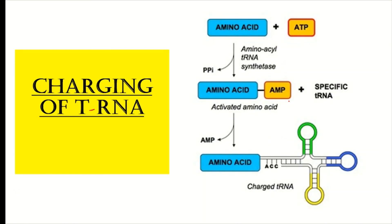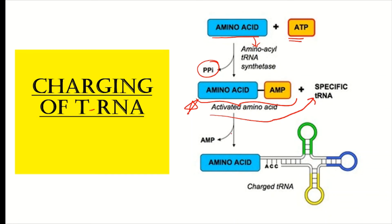Let's quickly recap the process of charging of transfer RNA. First, the amino acid binds to aminoacyl-tRNA synthetase in the presence of ATP, resulting in the formation of an amino acid–AMP complex; two inorganic phosphates (pyrophosphate) are removed and the amino acid is now activated. This activated amino acid then reacts with the specific transfer RNA; AMP is released and the amino acid binds to the specific transfer RNA. This entire process is called charging of transfer RNA, and the product is called charged transfer RNA.